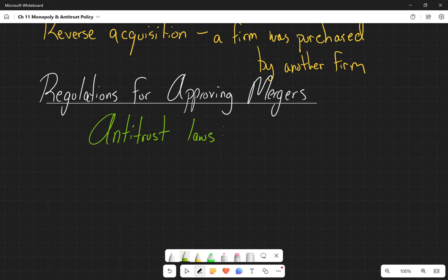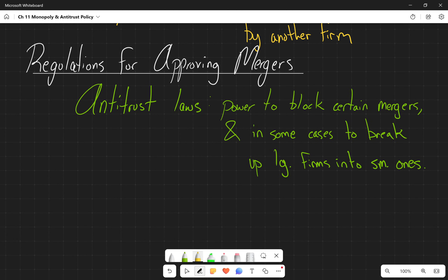So this is anti-monopolistic behavior laws. These are laws that give the government the power to block certain mergers and in some cases they actually have the power to break up larger firms into smaller ones.